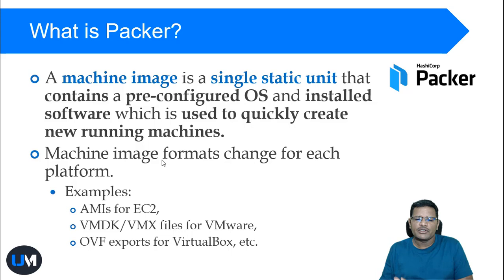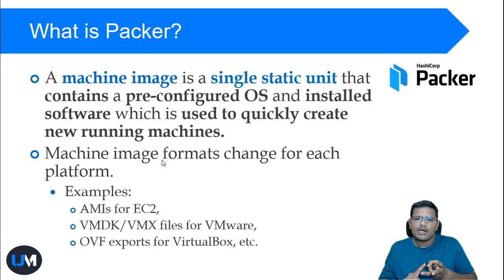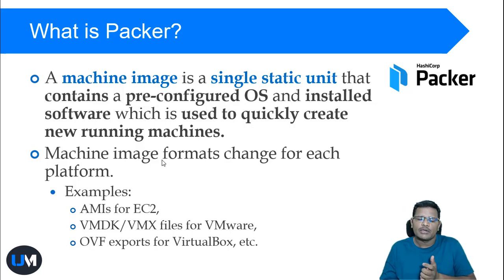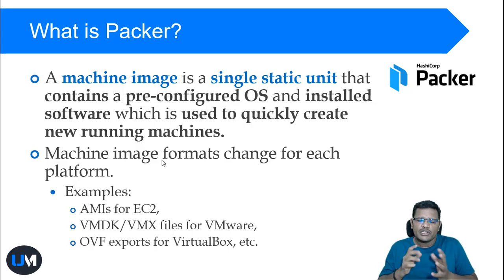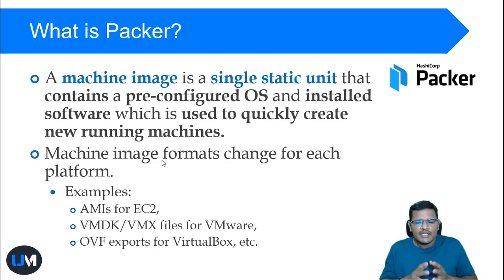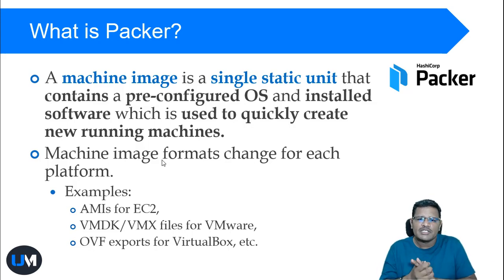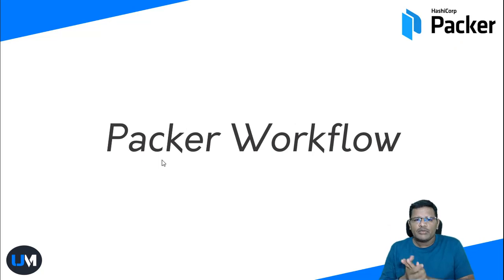A machine image is a single static unit that contains the operating system, security updates, and installed applications and software required for your application. Using this static image you can quickly create multiple machines. Machine images have various formats depending on the platform: in AWS it is called an Amazon Machine Image (AMI), in Azure it is called a VHD image, and for VirtualBox it is called an OVF export.